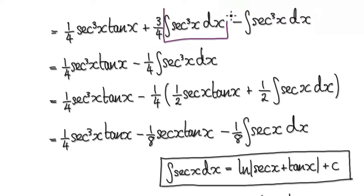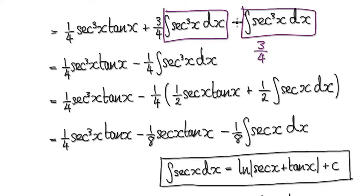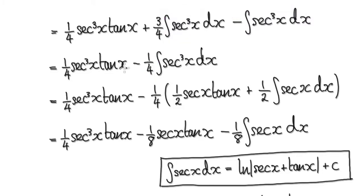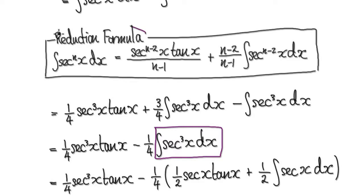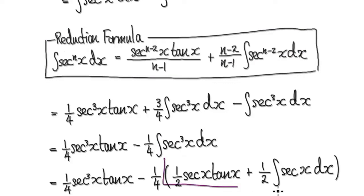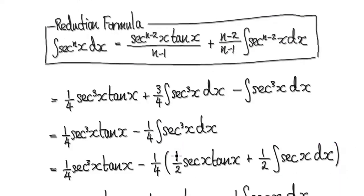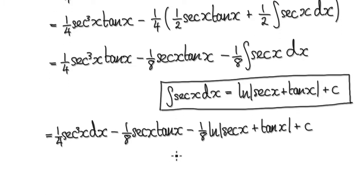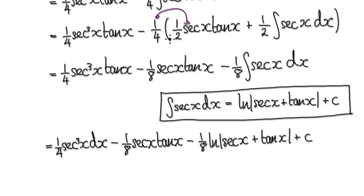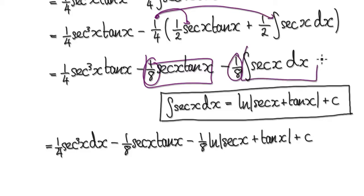And then now apply the reduction formula on this again. Applying the reduction formula on this integral gives us this expression. Tidying up: this times this gives this block, and this times this gives one eighth. And then you've got your integral of secant here.